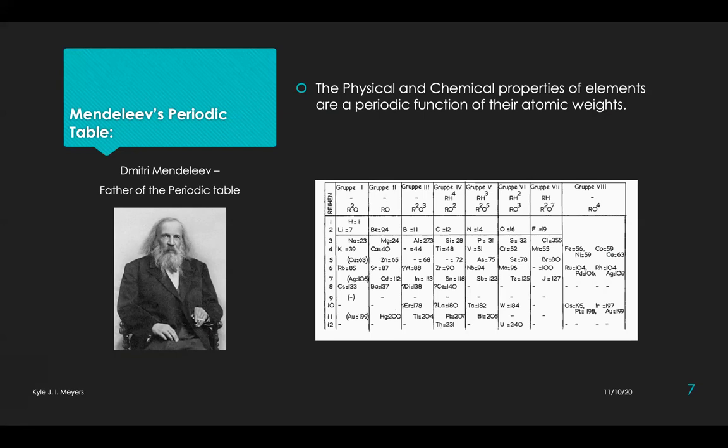Inert gases were not even discovered at that time. The elements were arranged in seven horizontal rows, called periods, and eight vertical columns, called groups. Some vacant spaces were specified for undiscovered elements and their properties, which were predicted by him. These were found to be true and verified when these elements were discovered later, and as a consequence, he was called the father of the periodic table.